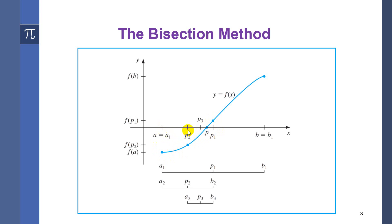Now f(p2) is negative, so we will eliminate a and take the left part of the interval to be p2, because it is the negative side. So we have the new interval [p2, p1]. Then we bisect this interval by 2, and so on. We are getting closer and closer to the real root p.